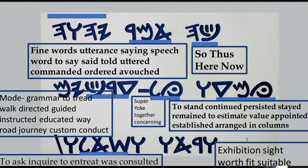The next word is Dalit-Resh-Kof — that's Derek — the mode, grammar, to read, walk, directed, guided, instructed, educated way, road, journey, custom, conduct. Then Waw-Resh-Aleph-Waw; what I could find in the dictionary was Resh-Aleph-Waw-He, which is site, exhibition. Or Resh-Aleph-Waw-Yod, which is worth, fit, suitable.